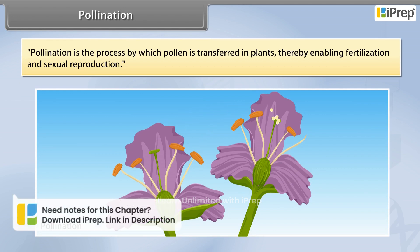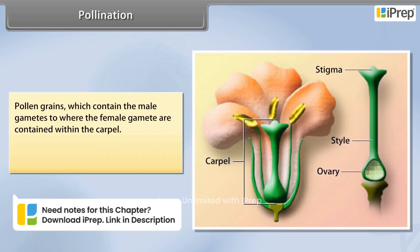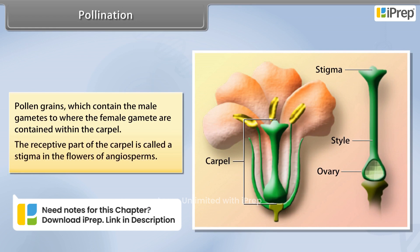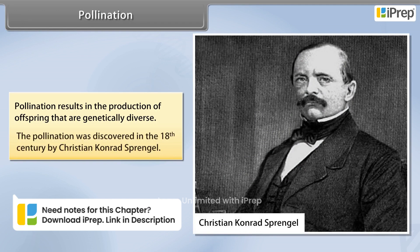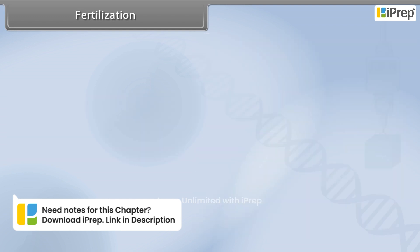Pollen grains, which contain the male gametes, are transferred to where the female gametes are contained within the carpel. The receptive part of the carpel is called the stigma. In the flowers of angiosperms, pollination results in the production of offspring that are genetically diverse. Pollination was discovered in the 18th century by Christian Conrad Sprengel.